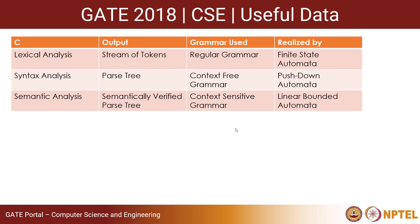Looking at the analysis phase (front end) of the compiler: lexical analysis produces a stream of tokens, and the grammar used to specify and generate that stream is regular grammar, which can be realized by finite state automata. In syntax analysis the output is a parse tree, it uses context free grammar, realized by a pushdown automaton. Semantic analysis generates a semantically verified parse tree, uses context sensitive grammar, and is realized by a linear bounded automaton.